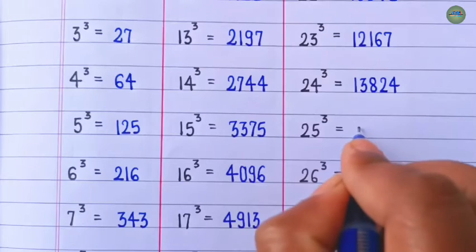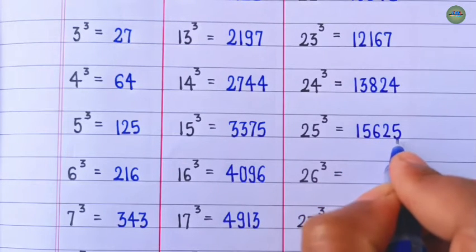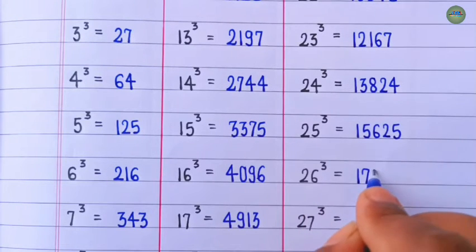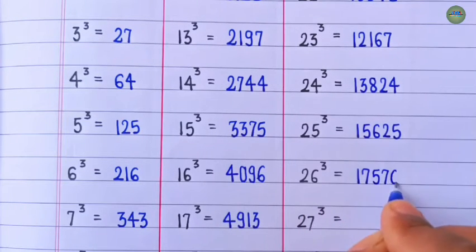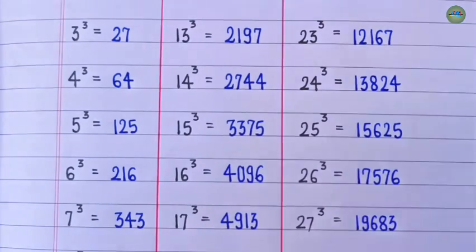Cube of 25 is 15,625. Cube of 26 is 17,576. Cube of 27 is 19,683.